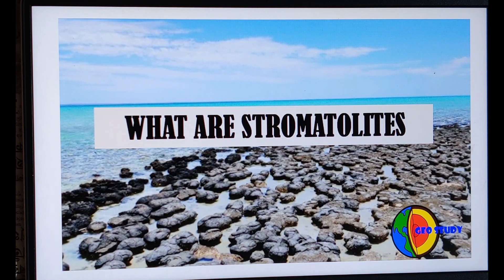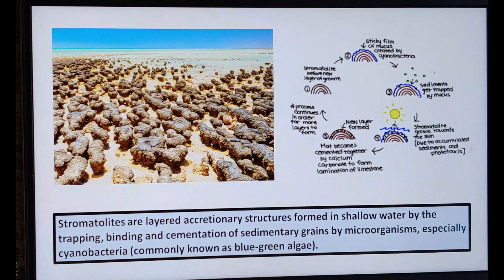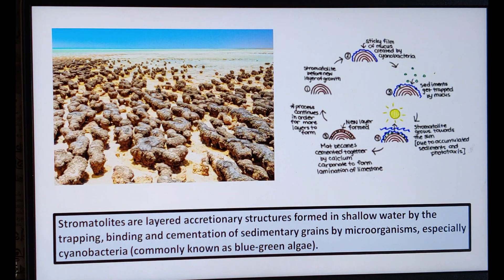Today we will be learning about stromatolites and what they are. Coming to the definition: stromatolites are layered accretionary structures formed in shallow water by trapping, binding, and cementation of sedimentary grains by microorganisms, especially cyanobacteria, commonly known as blue-green algae. Cyanobacteria form a sticky frame of mucus, and in this mucus the sediments get trapped, bound, and cemented to form the layers of stromatolites.